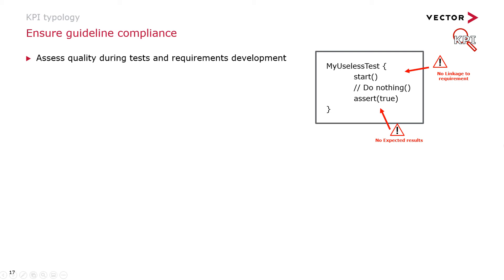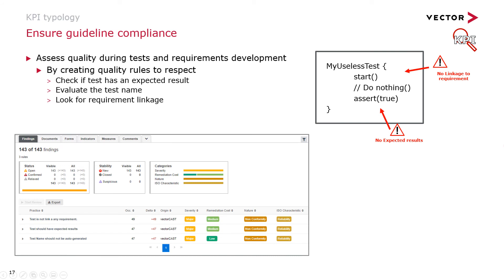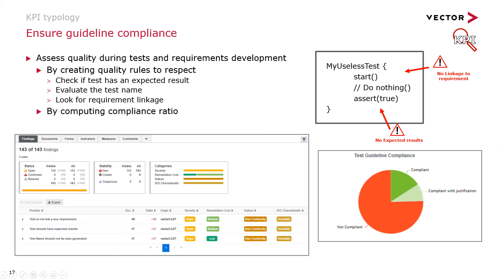The last KPI I'd like to highlight regards guideline compliance — specifically the design aspect of a test. Here we can see a useless test: it starts, does nothing, and asserts true. There is no linkage to requirements and no expected outputs. The idea is to use the different attributes of a test to create quality rules that everyone should respect during design — for instance, checking if every test has an expected output, evaluating the test name, or checking for a link to requirements. We use analytics techniques to track every deviation to these design standards and create a compliance rate to evaluate which elements respect the guidelines.